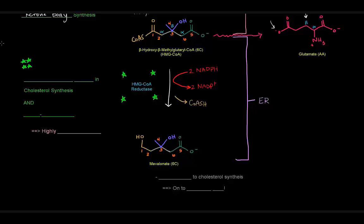We get mevalonate. The enzyme that catalyzes this reaction is HMG-CoA reductase, and there are a bunch of stars around this. The reason why is because this particular step is the committed step. This is the committed step in cholesterol biosynthesis. In addition to being the committed step, meaning that this mevalonate is now committed to cholesterol synthesis, this step is also the rate-limiting step of the entire process. Not only is mevalonate committed to it, but this reaction happens the slowest, so it's the rate-limiting step and it's going to be highly regulated. This is the control point for cholesterol synthesis.